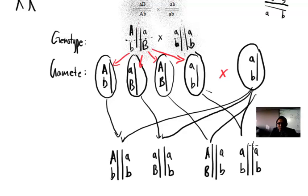Which ones are new combinations? Well look at this one from the far right. A little a little b, little a little b. Well that's exactly the same as this parent. That is not a new combination, that is not a new combination. So let's leave that.